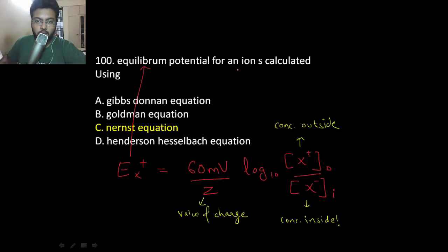Equilibrium potential for the ion is calculated by Nernst equation. And once again, if you're the one who wants to know what the hell is Nernst equation, it's given by 60 millivolts upon the valence of charge, and log of concentration outside and concentration inside of that ion.